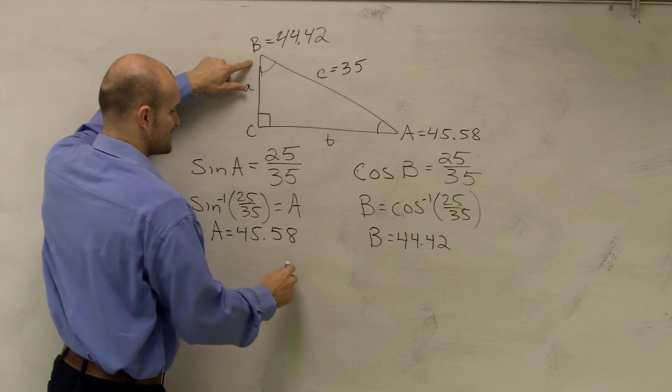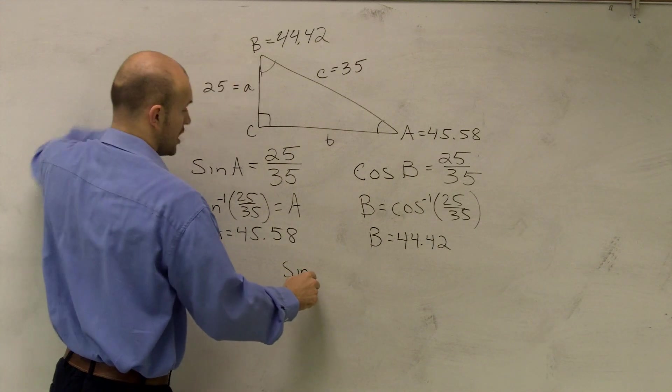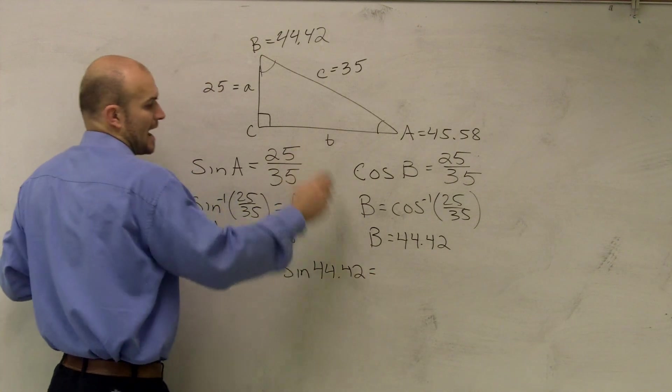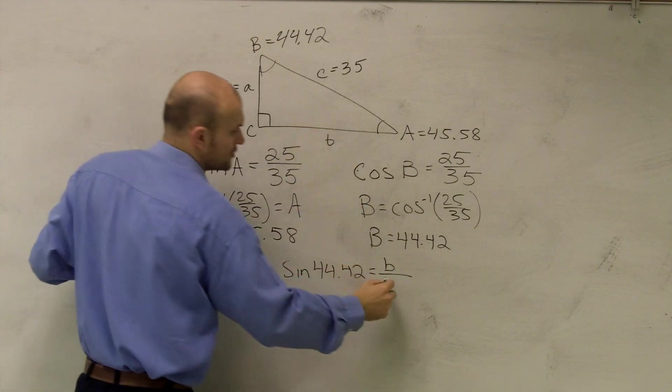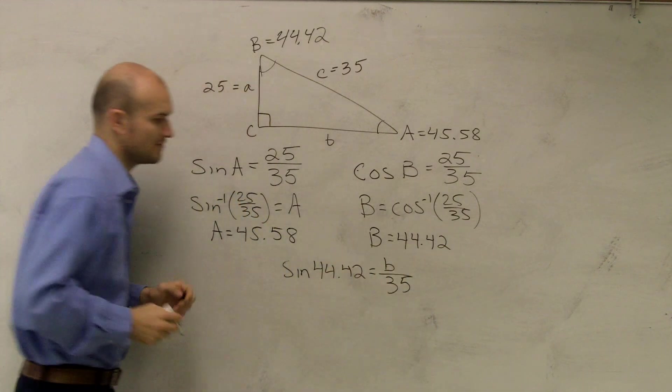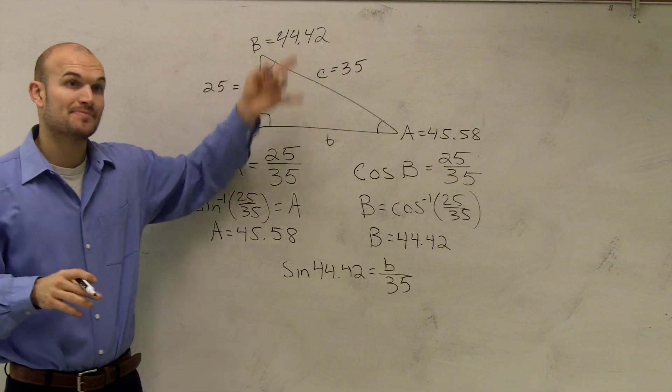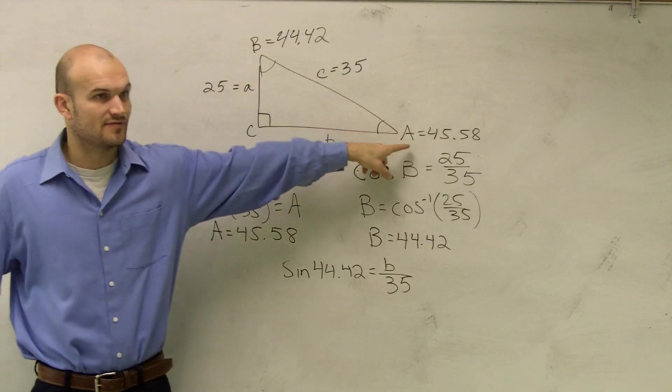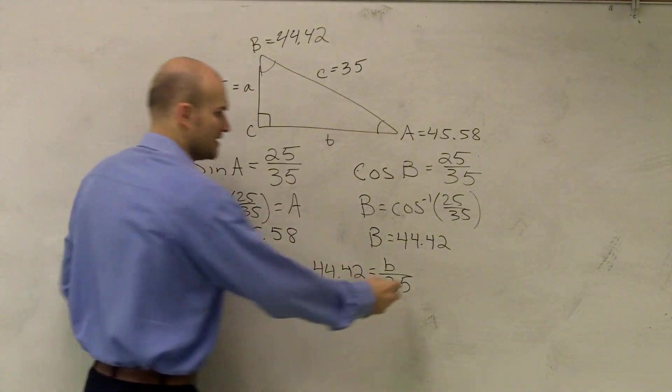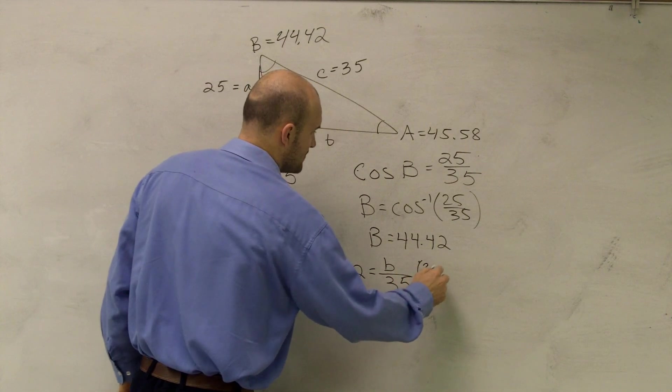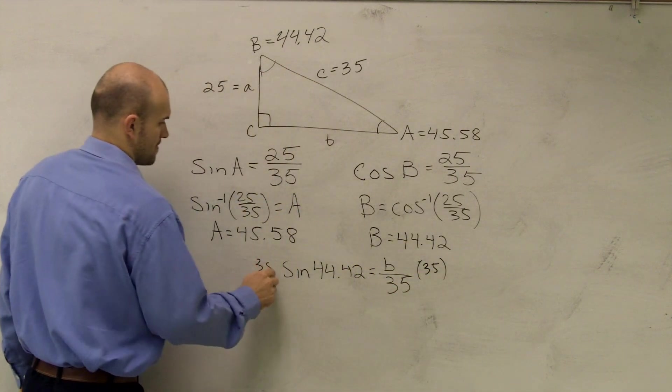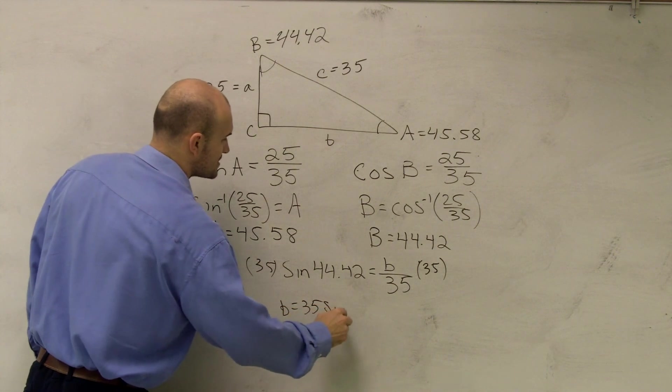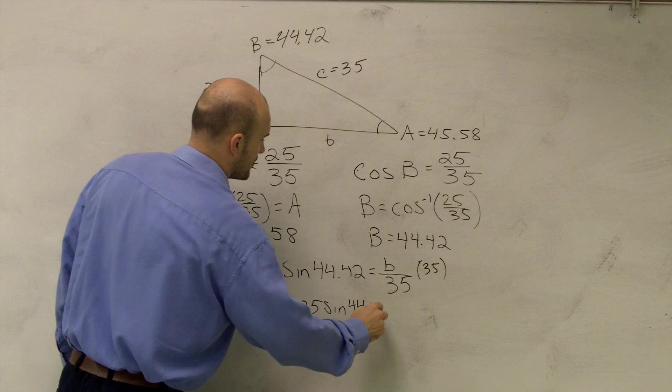So to figure out this side, I'm going to have to say sine of 44.42 is equal to the opposite, which is B, over my hypotenuse, which is 35. Sine is opposite over hypotenuse. Well, B is opposite of this length. It's adjacent of that angle. So now to solve for this, I get 35 off the bottom. So therefore, B equals 35 times sine of 44.42.